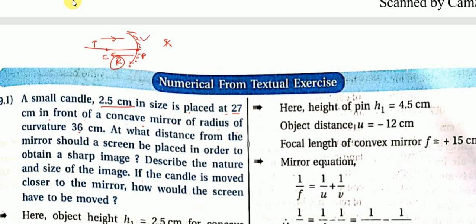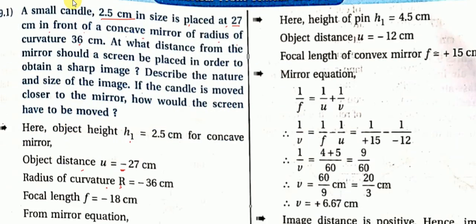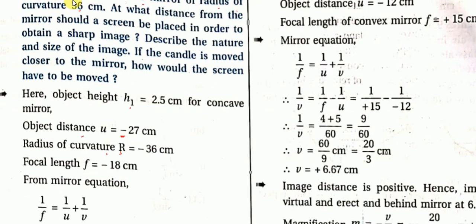So the radius of curvature is 36 cm, and since it's negative, R equals minus 36 cm. Focal length f equals R by 2, which is 36 by 2 equals 18, so f equals minus 18 cm.